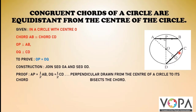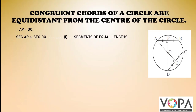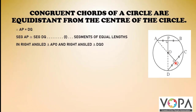Proof: AP equals half of AB, and DQ equals half of CD. The reason for this is that a perpendicular drawn from the center of a circle to its chord bisects the chord. Since AB equals CD (given), therefore AP equals DQ.